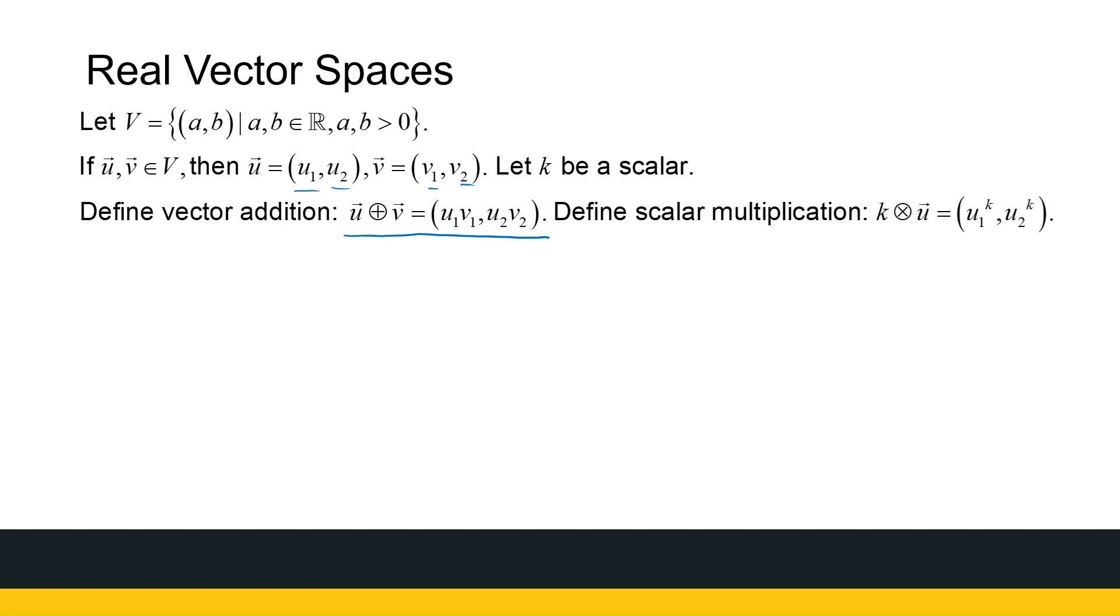So here's my vector addition. U plus V means I do add two vectors using this kind of addition that I'm talking about. I multiply the first components. And I multiply the second component. So this is what my vector addition looks like. Make peace with that.